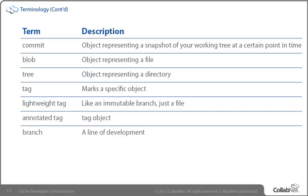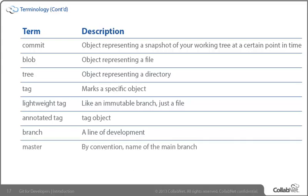A branch is a line of development — the implementation may be different, but its use and understanding is the same. By convention, when we create a new repository, whether from nothing or via a clone operation, we start out with an initial branch called master. You can relate it to what Subversion or CVS start out with — like trunk — or ClearCase and its main. By convention, that's the branch that's there, but note that 'by convention' means it doesn't have to be there.